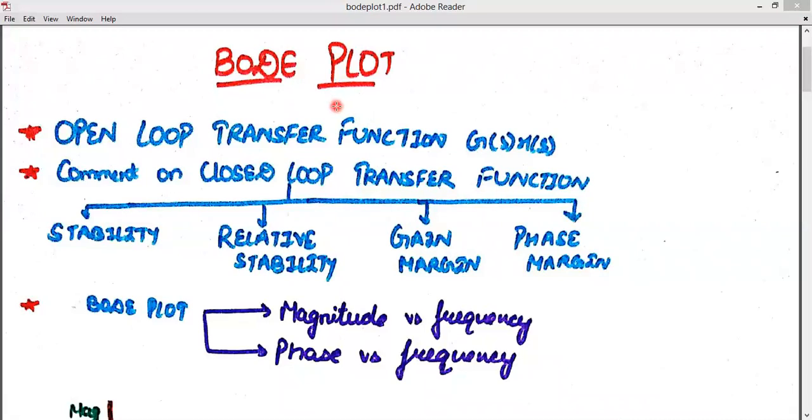Bode plot ke baare mein aap ek cheez bata hoon. First we need to know what Bode plot tells us about. Bode plot talks about open loop transfer function. You have to note that Bode plot always, most of the time, talks about open loop transfer function, means g(s) into h(s). Now what does this comment on? Bode plot comments on closed loop transfer function's stability, related stability, gain margin, phase margin.